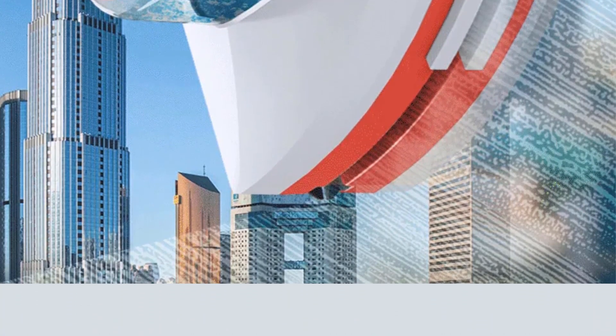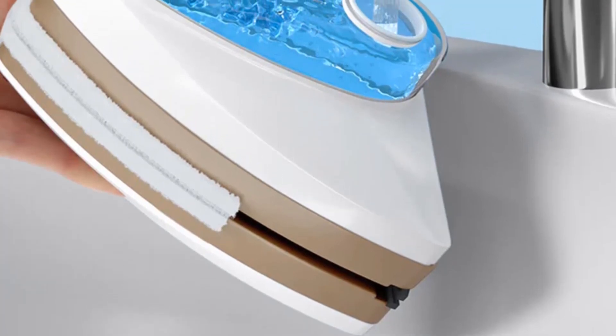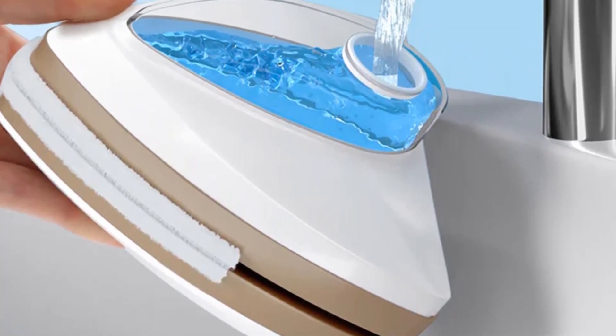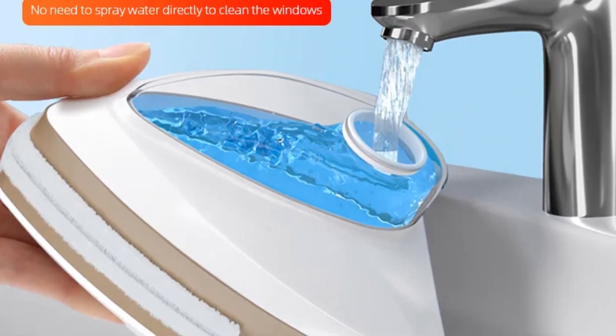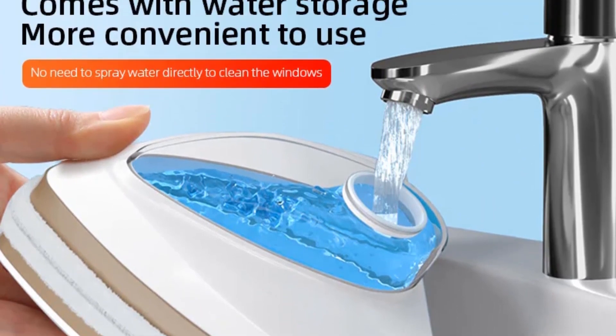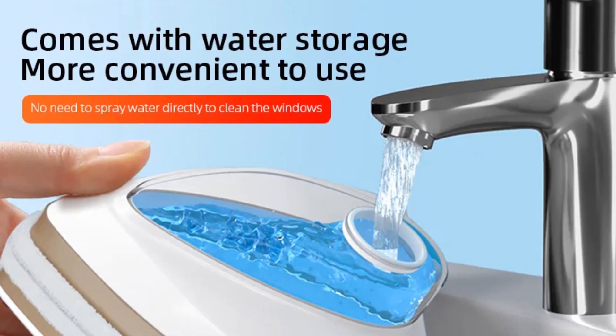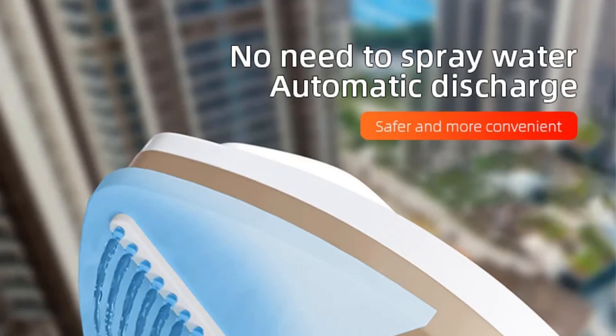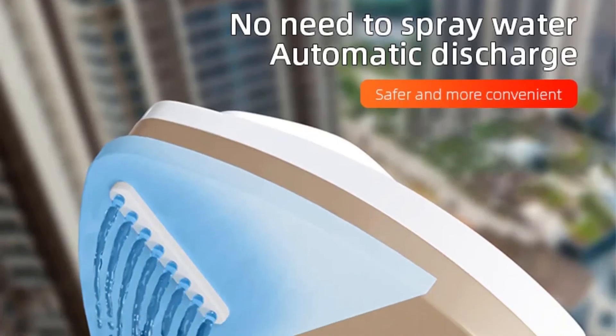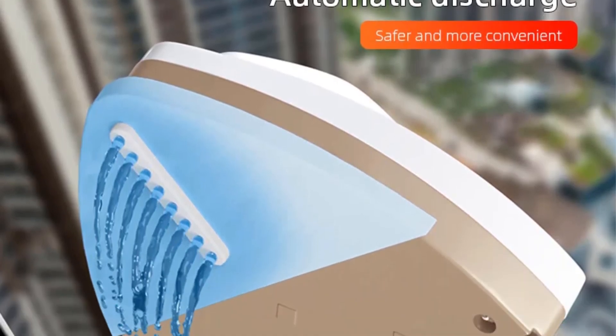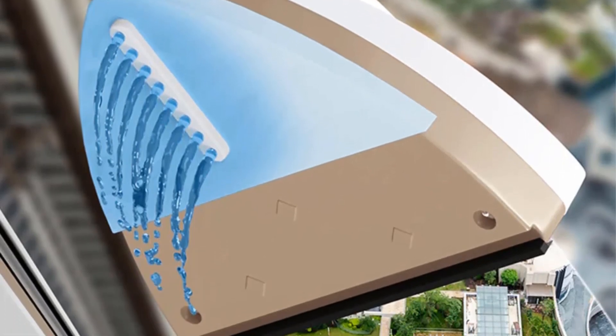Designed with the purpose of streamlining household chores, the Magnetic Window Cleaner is equipped with strong magnets to ensure a secure connection between the inner and outer components. This ensures that the device adheres to the glass surface, preventing accidental detachment or in case of detachment.